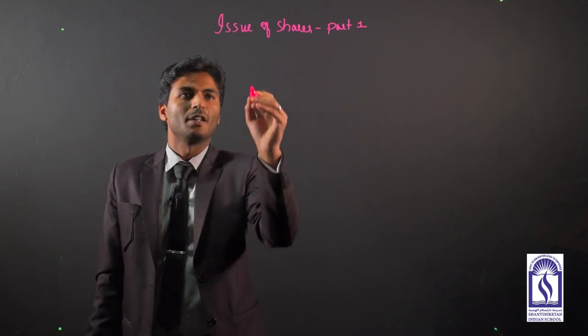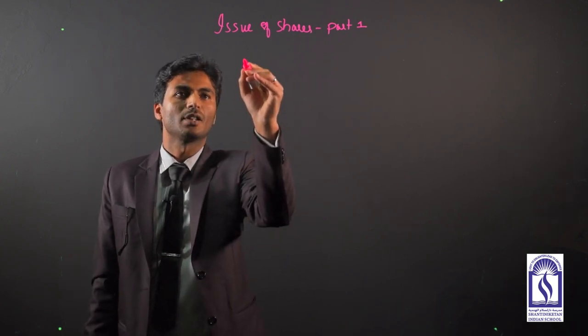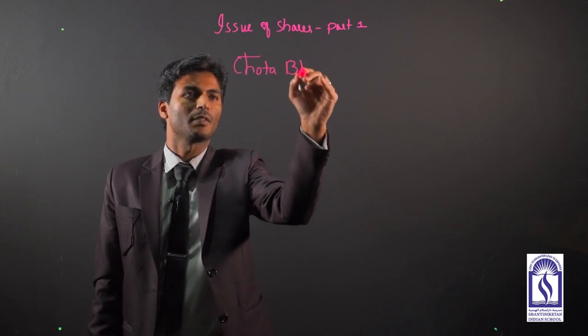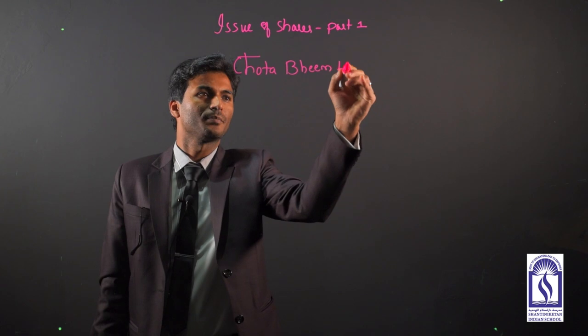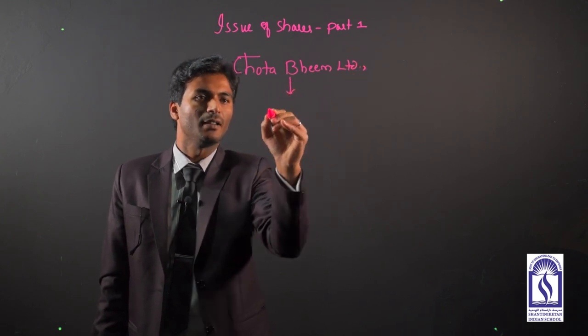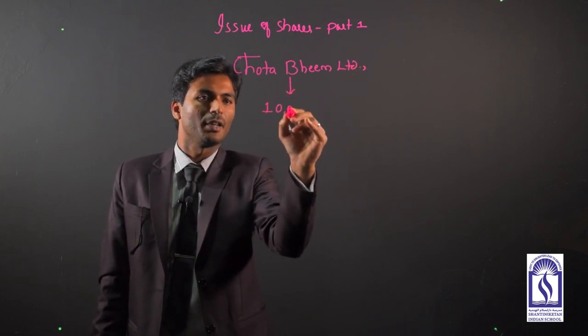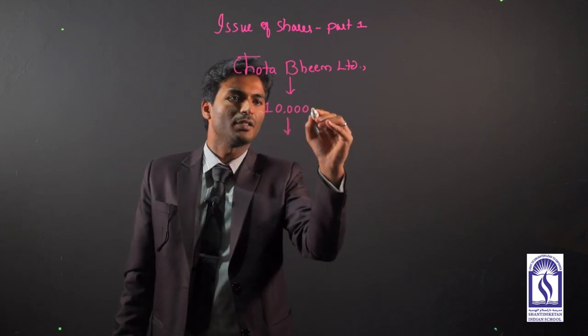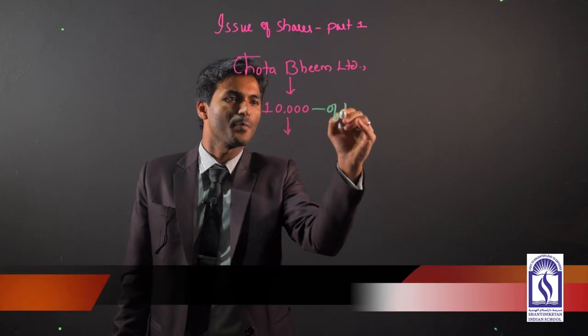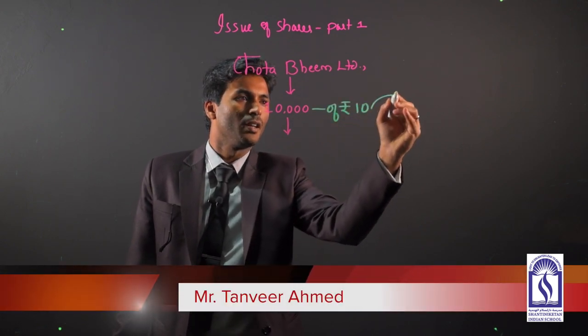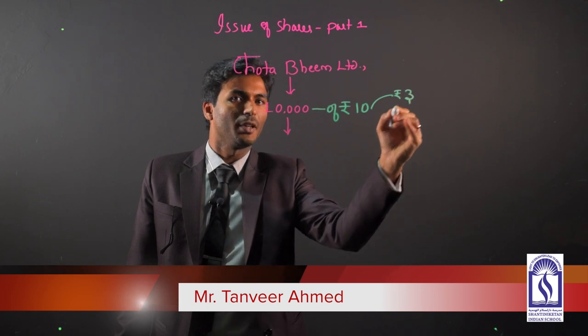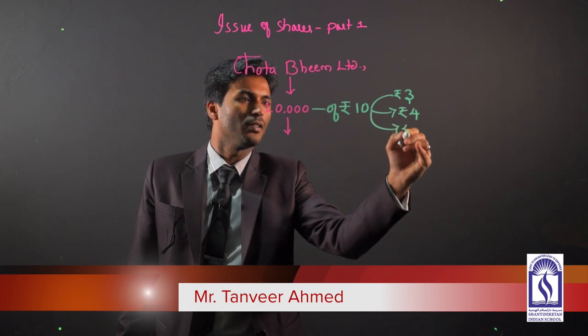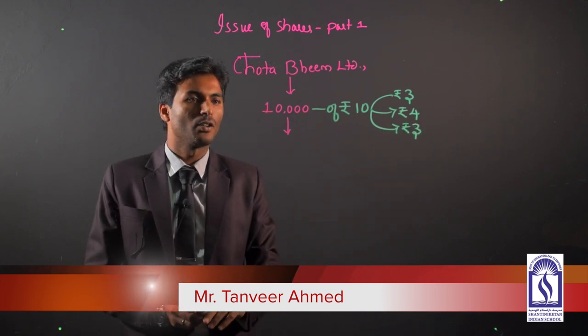In this chapter let us take a sample question so that we can understand it better. Let us evaluate: Chhota Bhim Limited invited 10,000 applications of rupees 10 each payable rupees 3 during application, rupees 4 during allotment and remaining rupees 3 during first and final call.